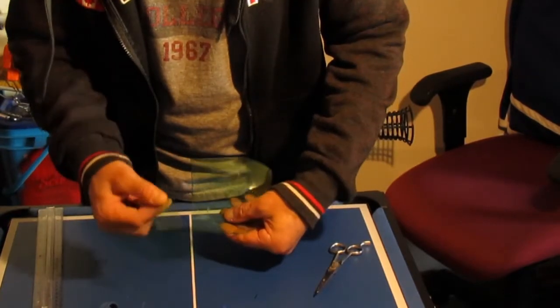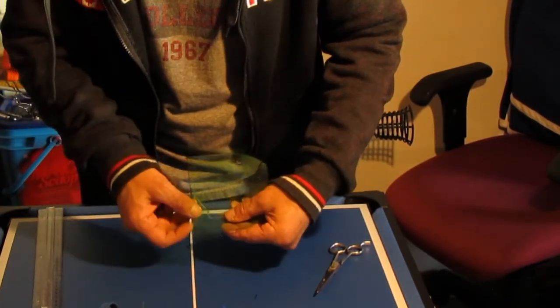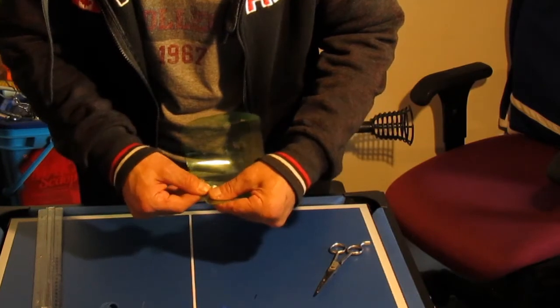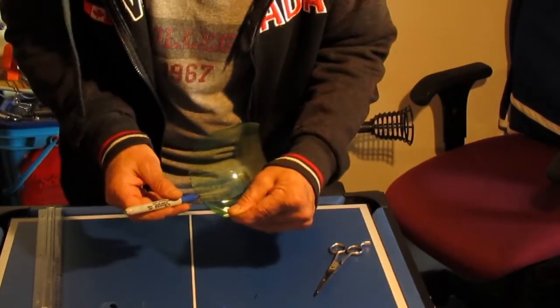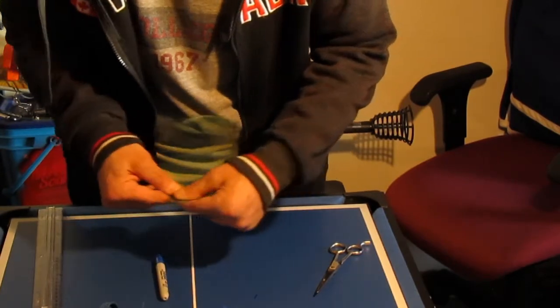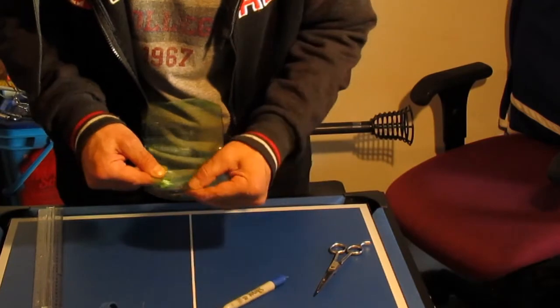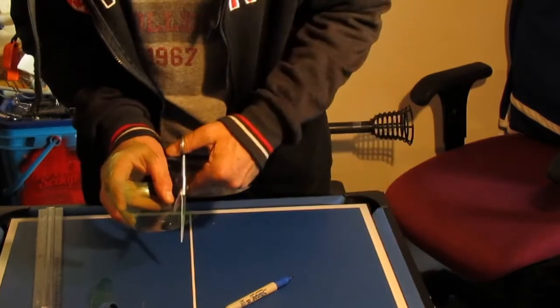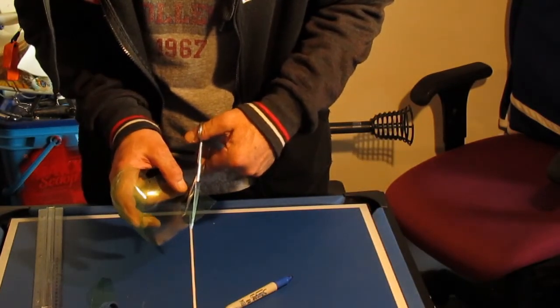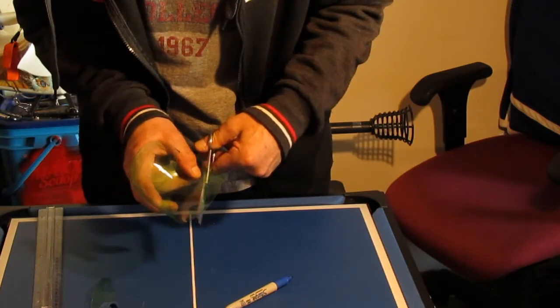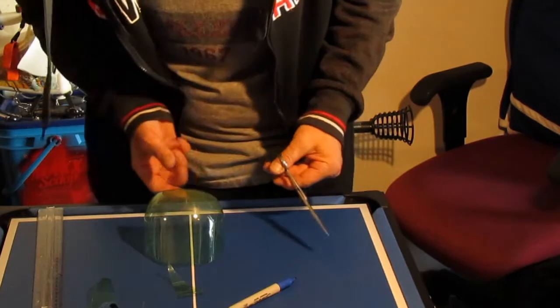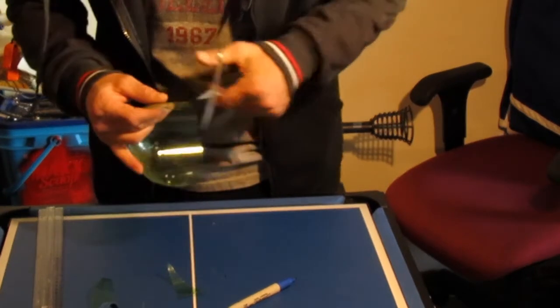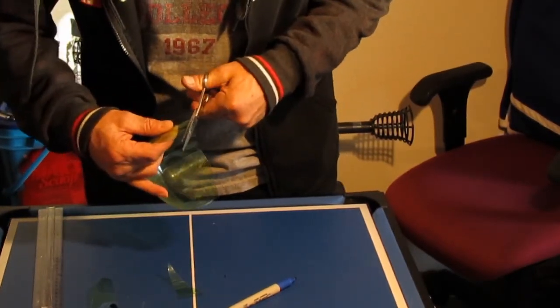So take that piece you just cut off, bring it to the other side like that, line it up. Put a mark here, put a mark here, put a mark there. Cut towards your marks. Round your corner.